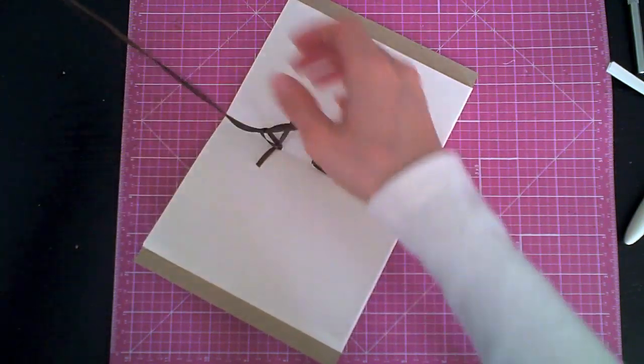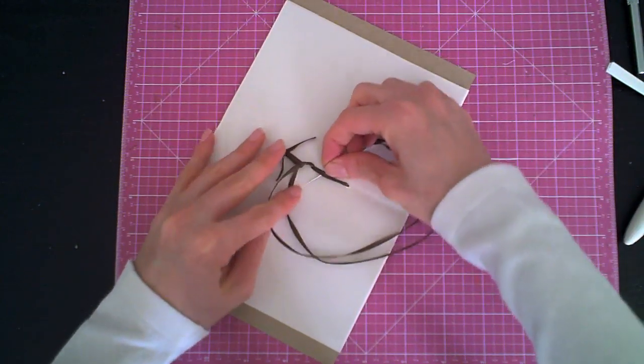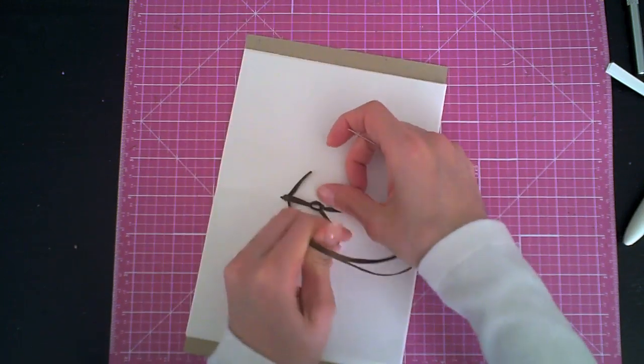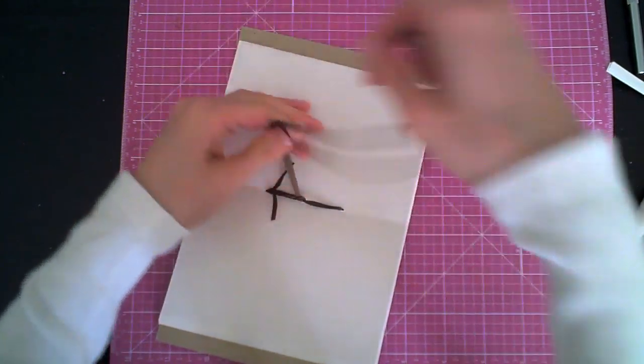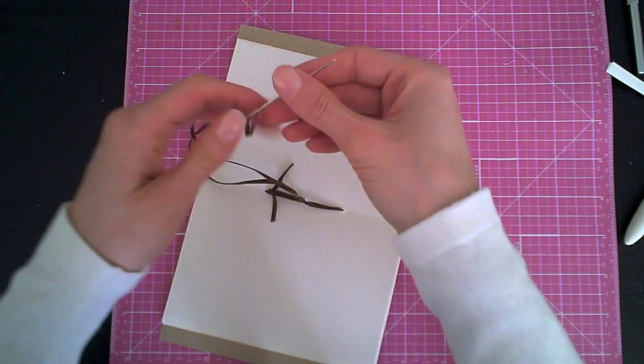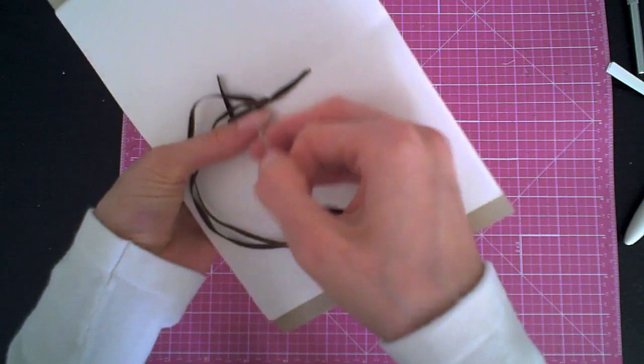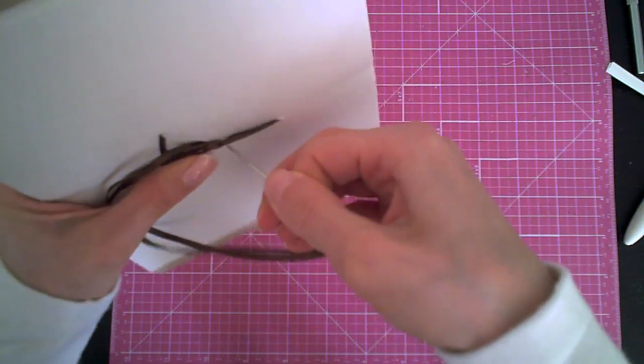Now I take the needle and loop it through the loop that the first two edges created, the tie created. And now I go underneath the first stitch again and then out again through the middle hole.